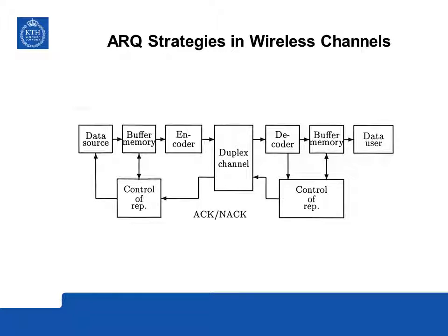This is a typical block diagram for a link protocol for transmission of packets in a wireless channel. On the left-hand side we have a data source that generates messages stored in the buffer memory of the transmitter. When a message is to be transmitted it is encoded — we add checksum bits — and the complete packet is then transmitted over the wireless channel, reaching the decoder at the receiver side. The decoder checks the checksum bits and determines whether the message was correctly received or not.